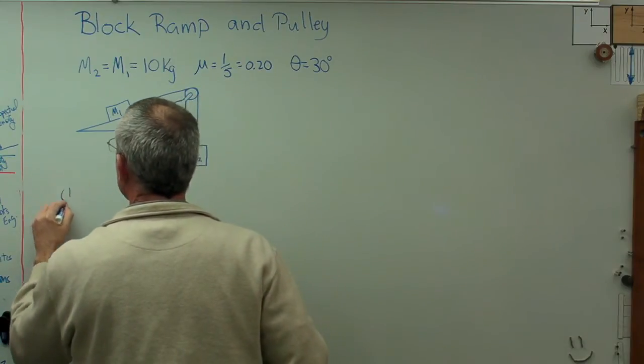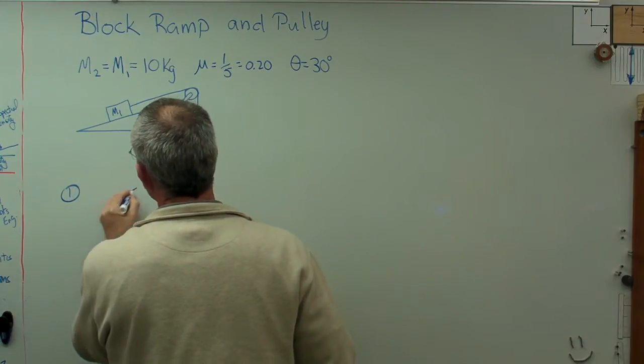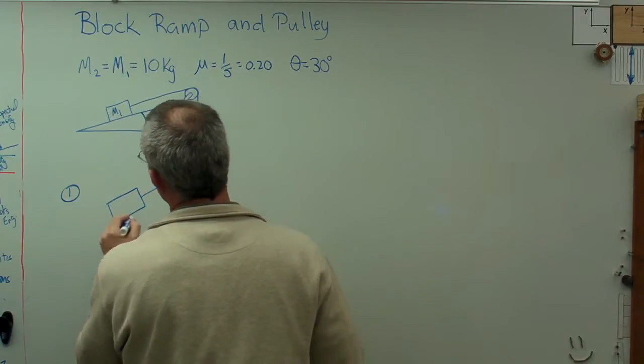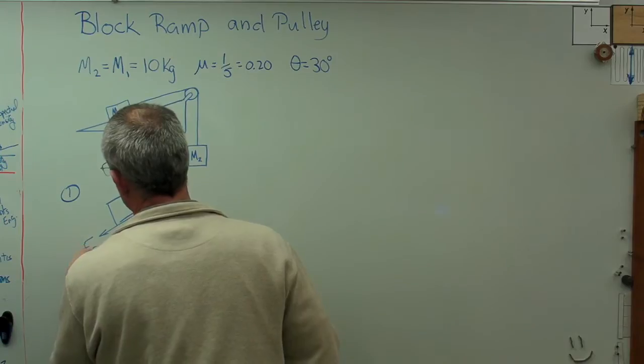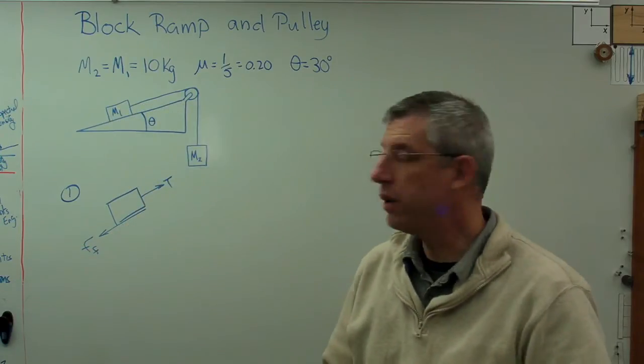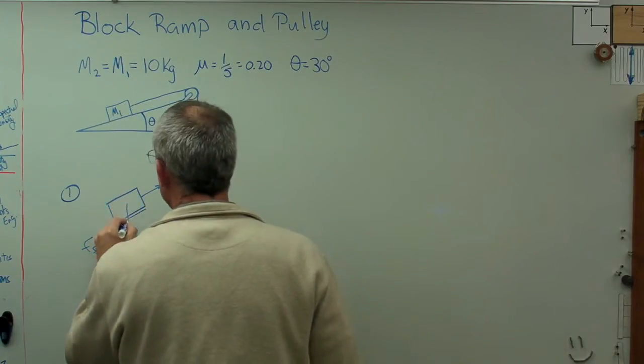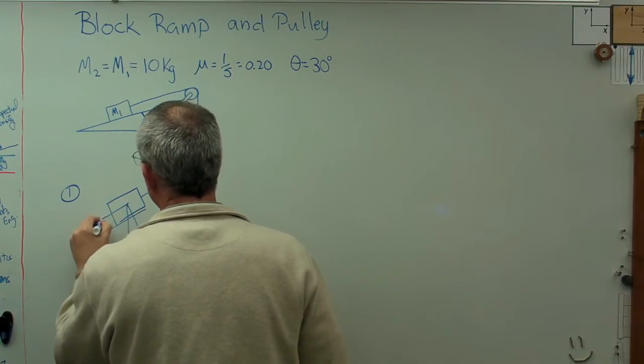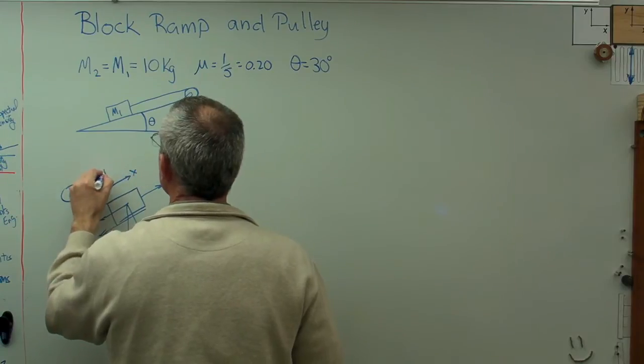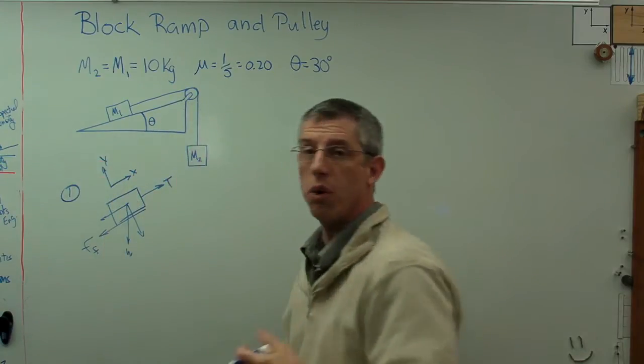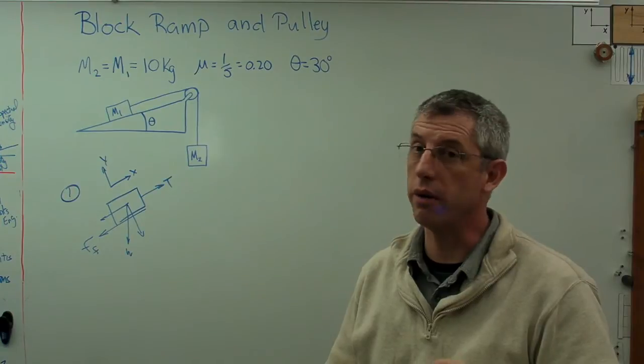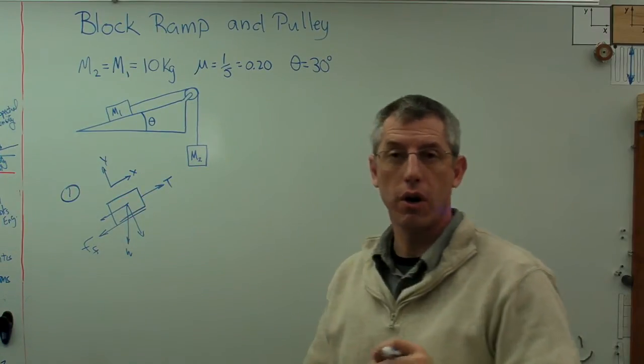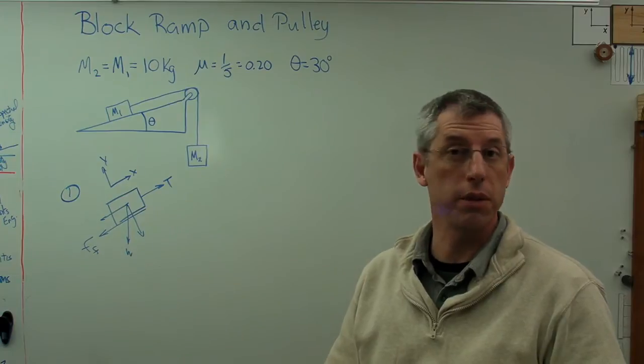Let's do mass 1 first. I've got a tension going up and a friction force going down the ramp. The only other force at play here is the weight of the block. I'm going to divide that up into components that suit the coordinate system I'm going to use here. I'm going to use two coordinate systems, one for each block. That's okay as long as the equations of motion are consistent within that coordinate system.